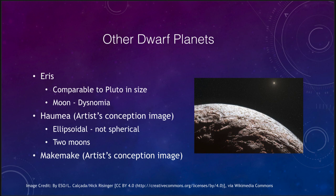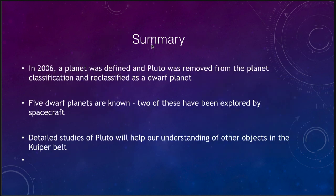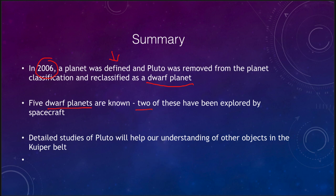To summarize: in 2006 we made a formal definition of a planet for the first time, which meant that Pluto was removed from the classification of planet and reclassified as a dwarf planet. There are five dwarf planets known at this time. Two of these — Ceres in the asteroid belt and Pluto in the Kuiper belt — have been explored by spacecraft. Our detailed studies of Pluto will help our understanding of other Kuiper belt objects, though we are making extrapolations based on what we know of Pluto.